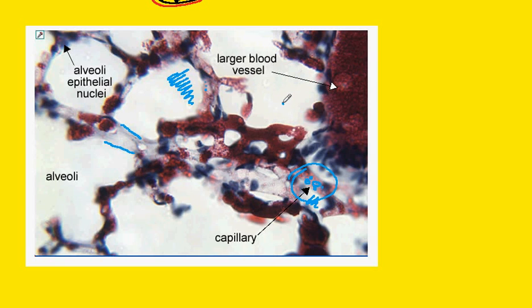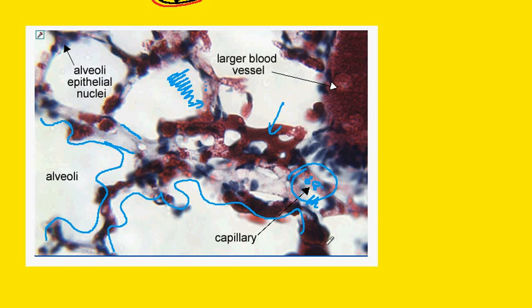We have a dense network of blood vessels, very short diffusion distances, and a very large total surface area. And of course, we also have the moist surface of the alveoli, which can't be seen in this particular image.